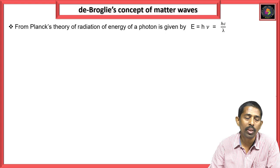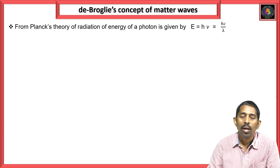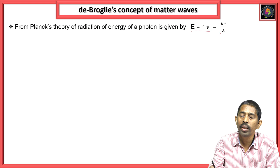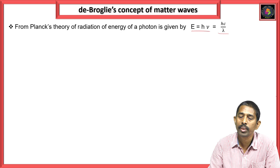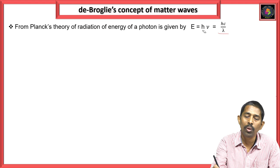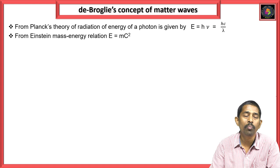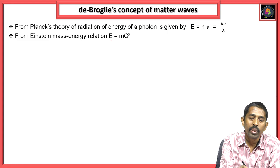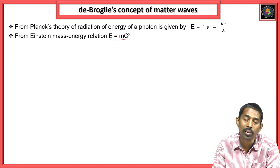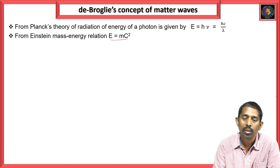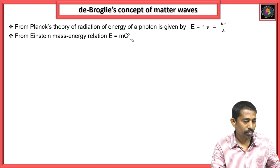Here we take two equations. The first is from the quantum theory of radiation: E = hν, or equivalently E = hc/λ, where ν = c/λ — this is based on Planck's quantum theory. The second equation is from Einstein's mass-energy relation: E = mc², where m is the mass and c is the velocity of light.